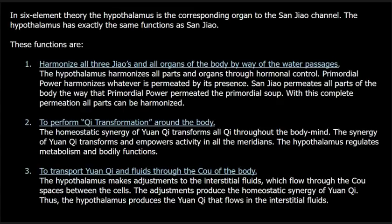Second function: to perform qi transformation around the body. The homeostatic synergy of yuanqi transforms all qi throughout the body-mind. The synergy of yuanqi transforms and empowers activity in all the meridians. The hypothalamus regulates metabolism and bodily functions. Third function: to transport yuanqi and fluids through the cou of the body. The hypothalamus makes adjustments to the interstitial fluids, which flow through the cou spaces between the cells. The adjustments produce the homeostatic synergy of yuanqi. Thus, the hypothalamus produces the yuanqi that flows in the interstitial fluids.